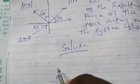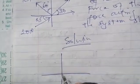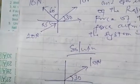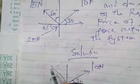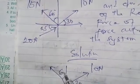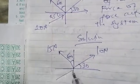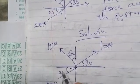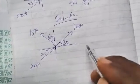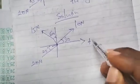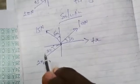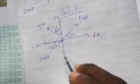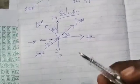Let's solve this problem. We have a 10 Newtons force inclined at 30 degrees to the horizontal, a 15 Newtons force inclined at 60 degrees to the vertical, and a 20 Newtons force inclined at 25 degrees. The positive x-component points right, negative x points left, positive y points up, and negative y points down.